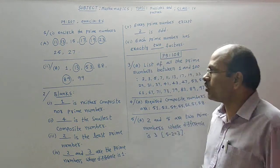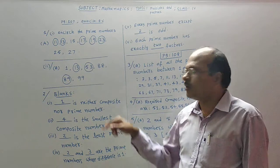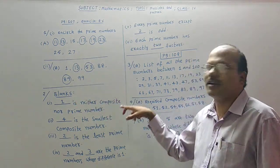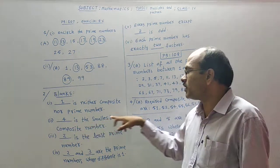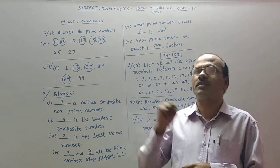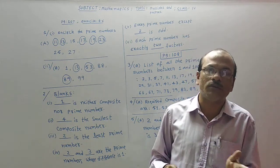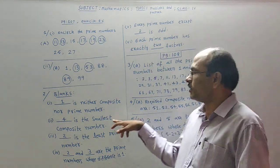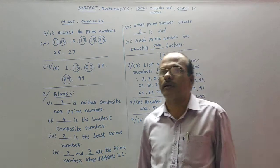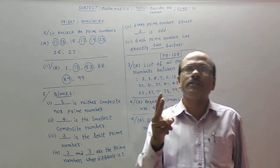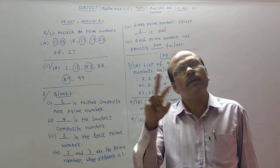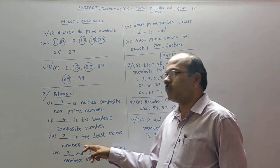Now we will fill in the blanks on page 107, question 2. Blank: '1 is neither composite nor prime number' — just as I explained. Next blank: '4 is the smallest composite number.' Before 4, the numbers 1, 2, and 3 are not composite. But 4 is the smallest composite number. Next blank: '2 is the least prime number,' because 2 is having 2 factors — 1 is a factor for 2, and 2 is also a factor for 2. So 2 is the least prime number.